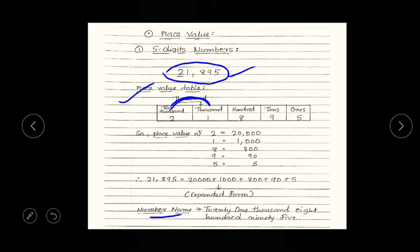So, how many thousand? Twenty one thousands. Then we have eight hundred and ninety five. So, the number name will be twenty one thousand eight hundred ninety five. Simple or not? Yes, it is very simple.